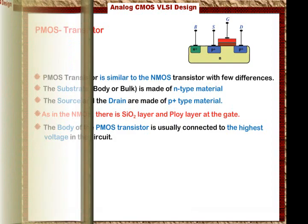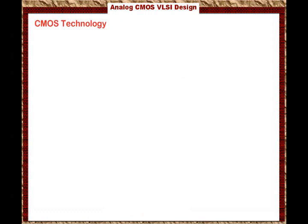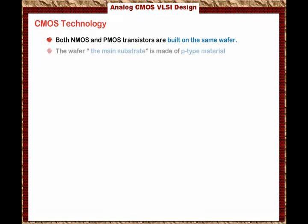We are ready now to discuss CMOS technology. In CMOS technology, both NMOS and PMOS transistors are built on the same wafer. Wafer means the main substrate or the main body or the bulk of the integrated circuit, and it is usually made of P-type material. Current state-of-the-art manufacturing processes use P-type material for the bulk to manufacture CMOS technology.